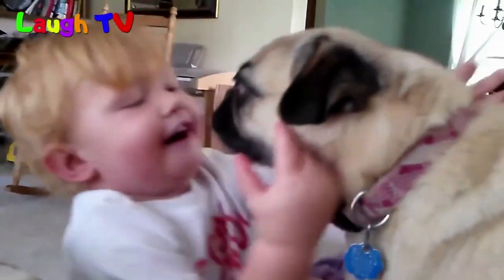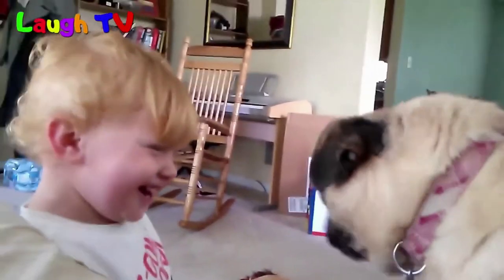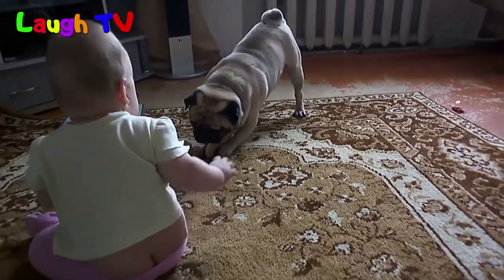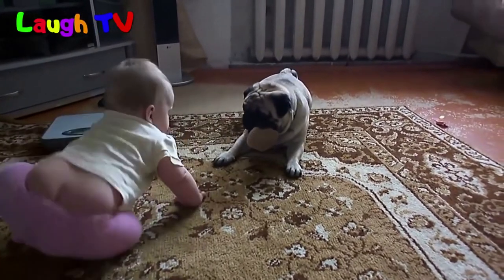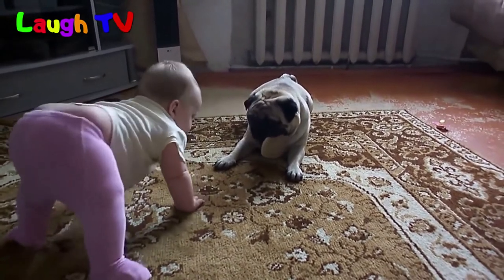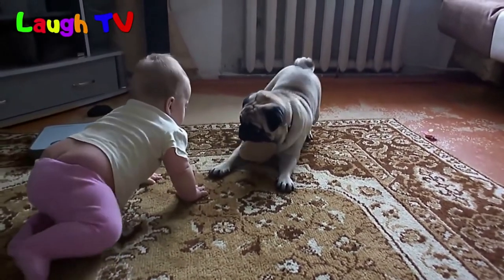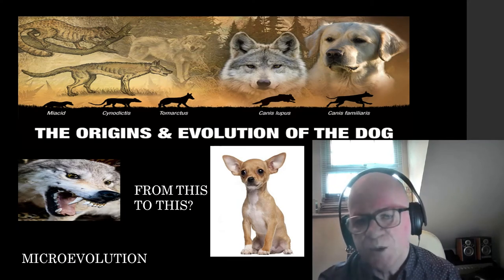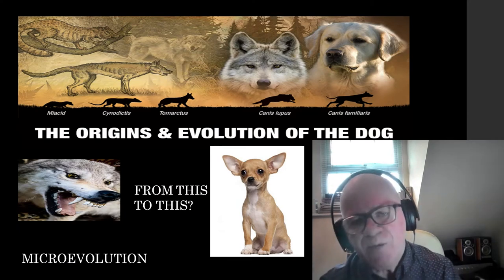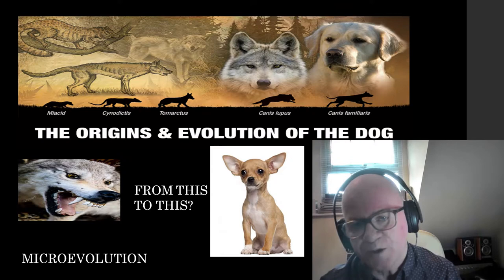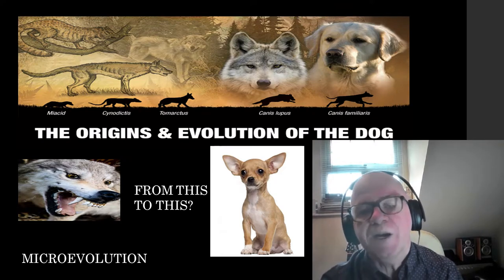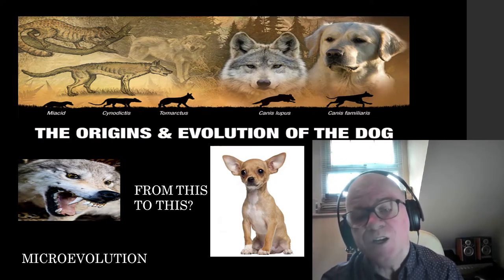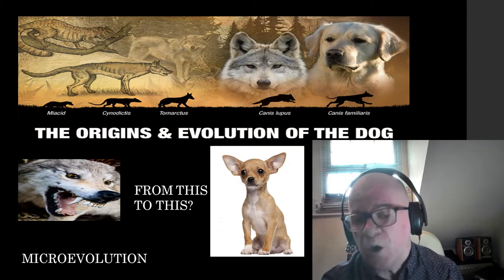Yes, that playful little dog has a great-great-great-great-granddaddy, and that granddaddy happens to be its ancestor — a wolf. The process that leads to a physical and behavioral change in a living organism is a prediction made in the science of evolution, and is certainly observed in wolf-dog evolution.